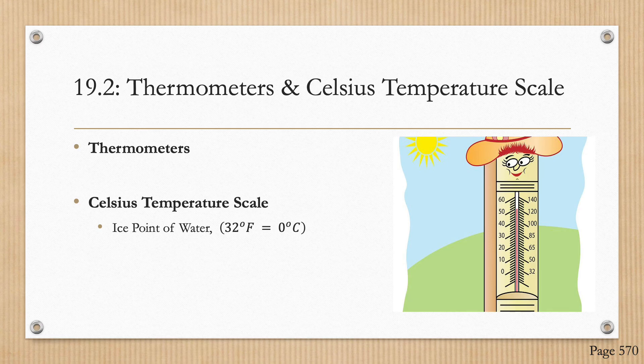In this next section we are going to discuss thermometers and the Celsius temperature scale. Thermometers are devices used to measure the temperature of a system. All thermometers are based on the principle that some physical property of a system changes as the system's temperature changes. Physical properties that change with temperature include the volume of a liquid, the dimensions of a solid, the pressure of a gas at constant volume, the volume of a gas at constant pressure, the electric resistance of a conductor, and the color of an object.